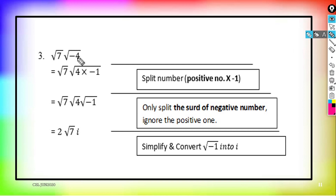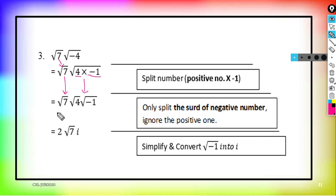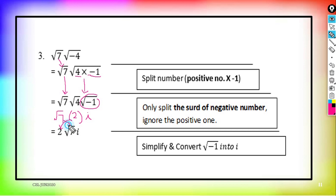Number 3: √7 × √(−4). √7 remains as a real number. For √(−4), we split it into 4 × (−1), then separate into √4 × √(−1). √7 remains, √4 = 2, and √(−1) = i. Rearranging, we put 2 in front, then √7 in the middle, then i. So the answer is 2√7·i.